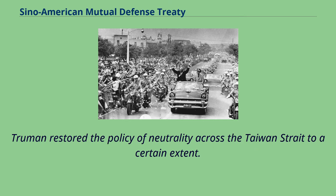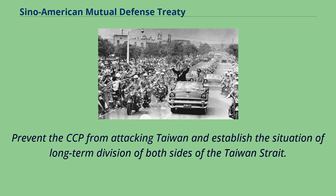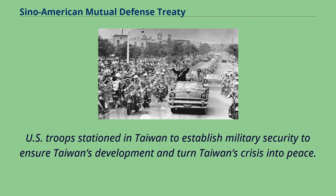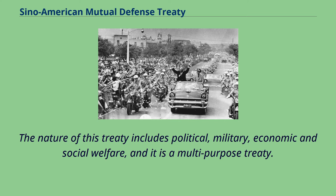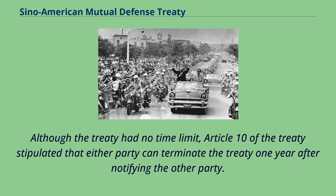Truman restored the policy of neutrality across the Taiwan Strait to a certain extent, preventing the CCP from attacking Taiwan and establishing the situation of long-term division on both sides of the Taiwan Strait. U.S. troops stationed in Taiwan established military security to ensure Taiwan's development and turn Taiwan's crisis into peace. The nature of this treaty includes political, military, economic, and social welfare dimensions, making it a multi-purpose treaty. Although the treaty had no time limit, Article 10 stipulated that either party could terminate the treaty one year after notifying the other party.